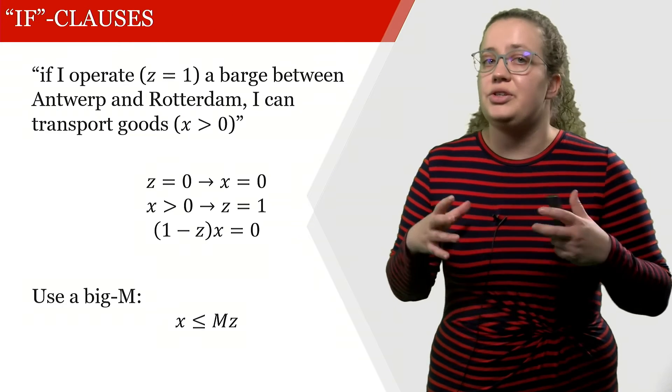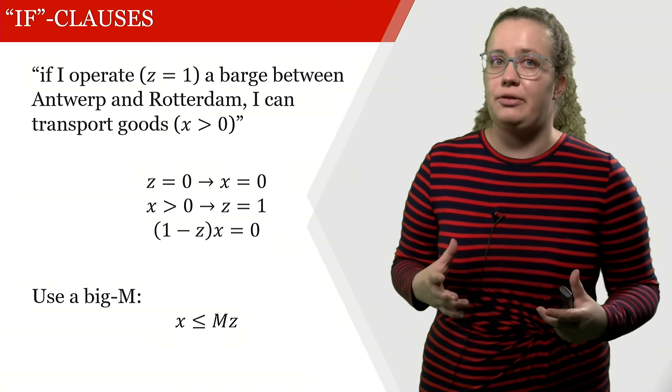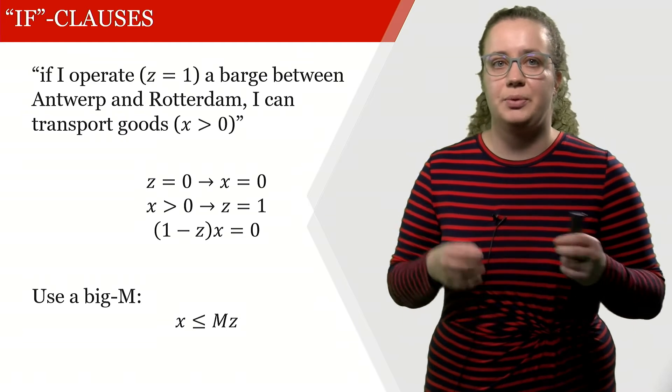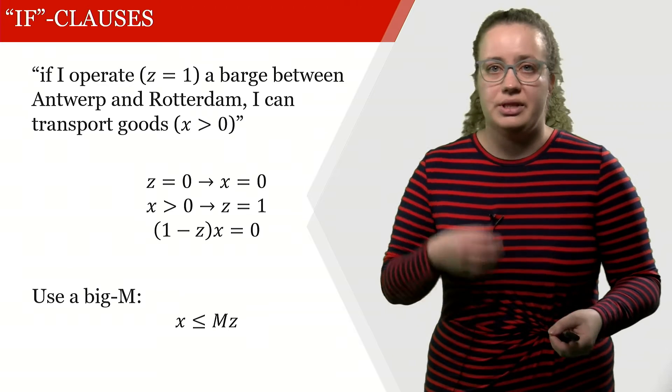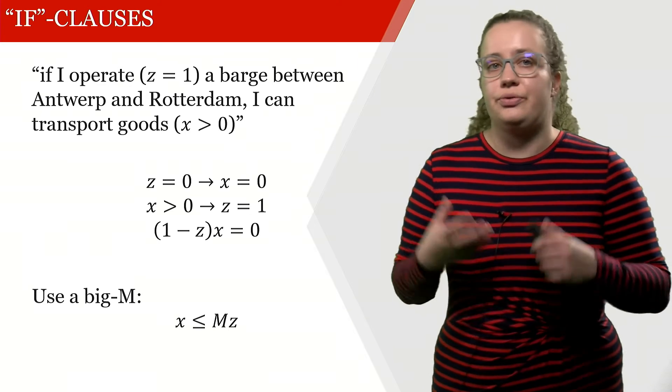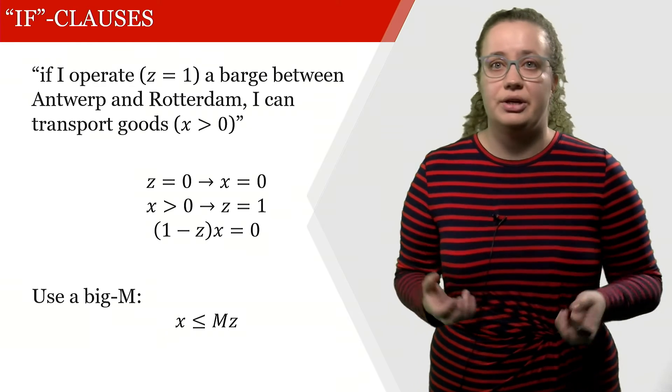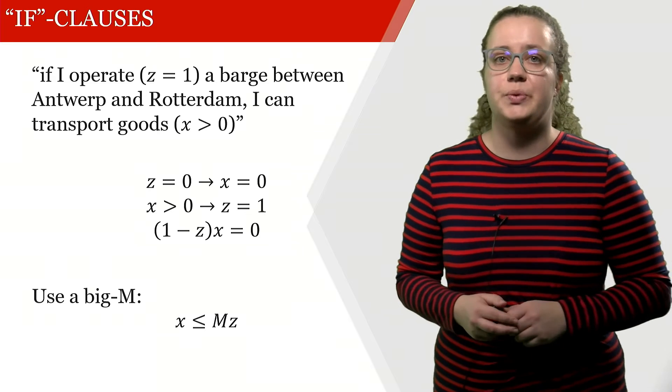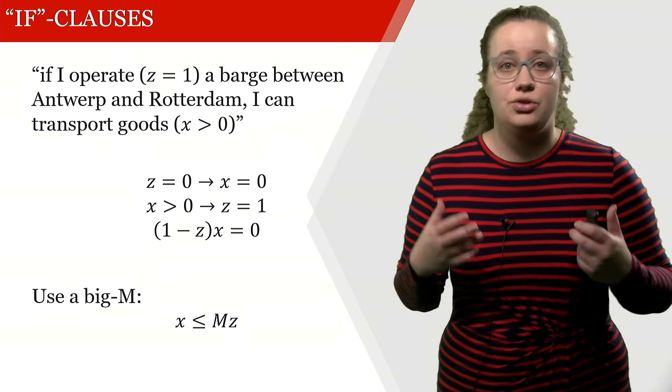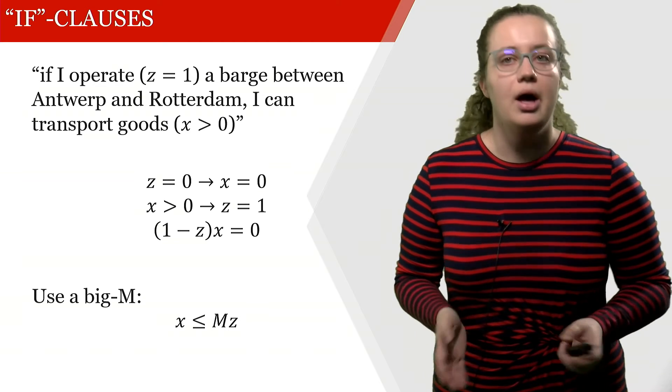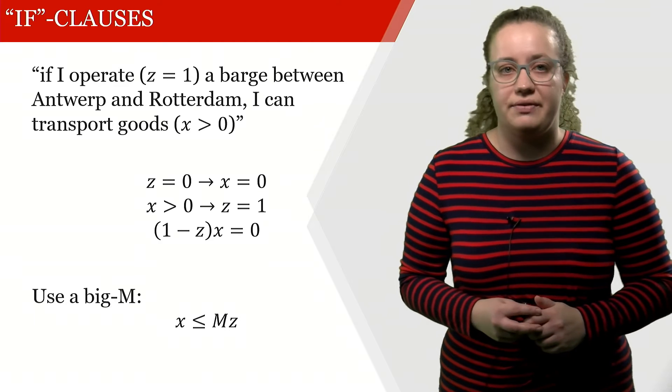In general, we can have a lot of if clauses. If I operate a barge between Antwerp and Rotterdam, I can transport goods. Now we say our variable here is z, z equals 1, then a barge goes from Antwerp to Rotterdam. If I do not operate this barge, then my z is 0 and then I cannot transport everything.